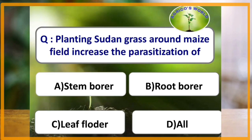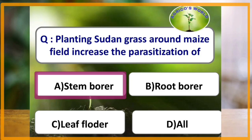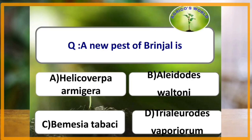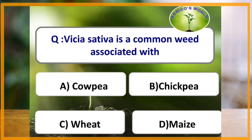Planting Sudan grass around maize crop increases the parasitization of which of the following pest? The answer is stem borer. A new pest of brinjal is Allidodes waltoni. Vishya sativa is a common weed associated with which of the following crops? The answer is wheat.